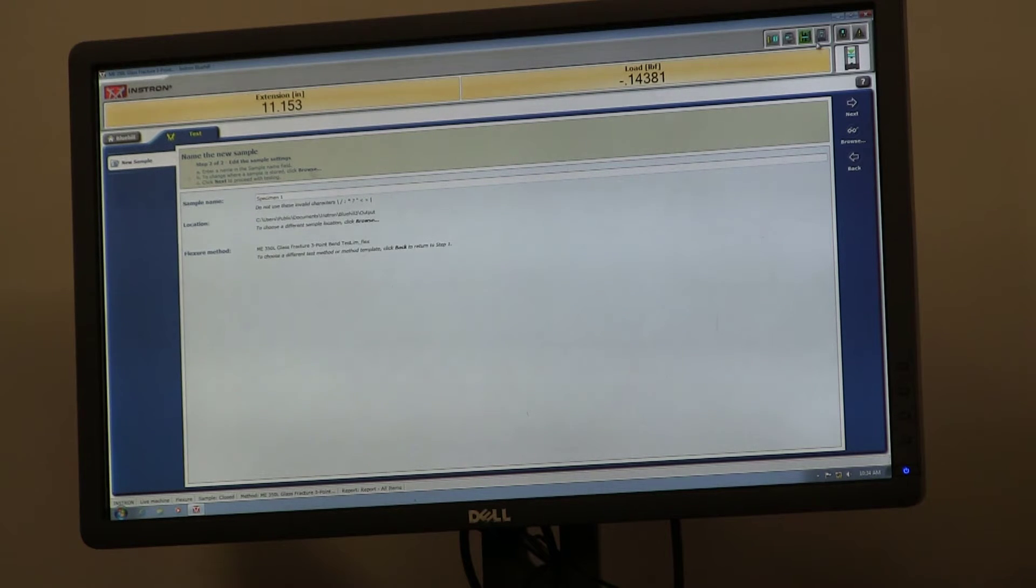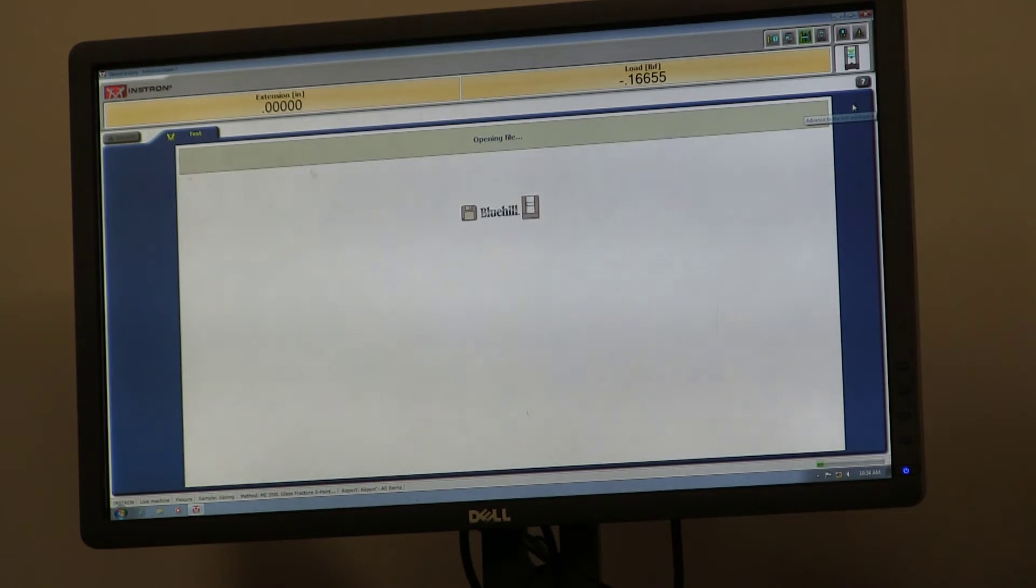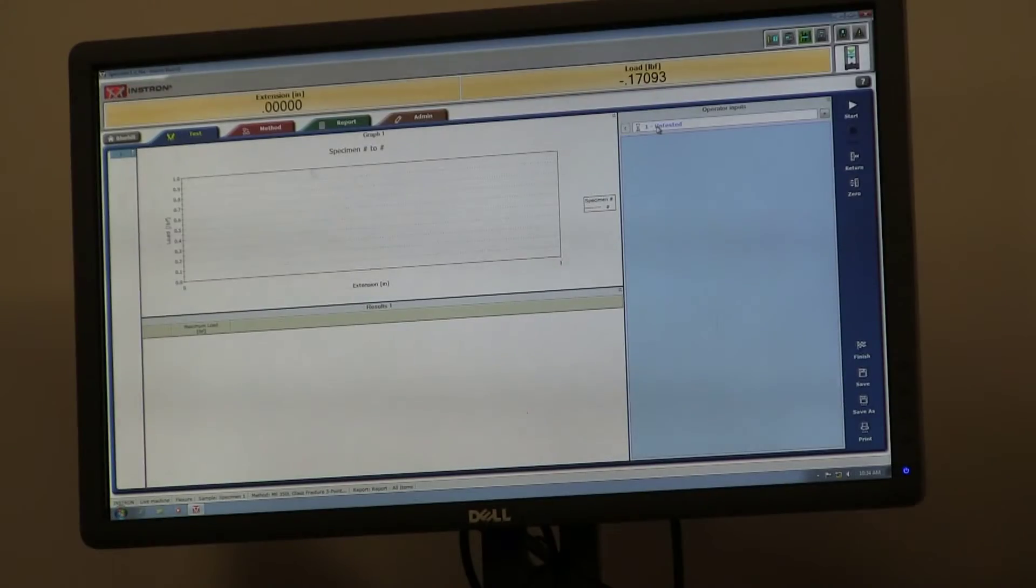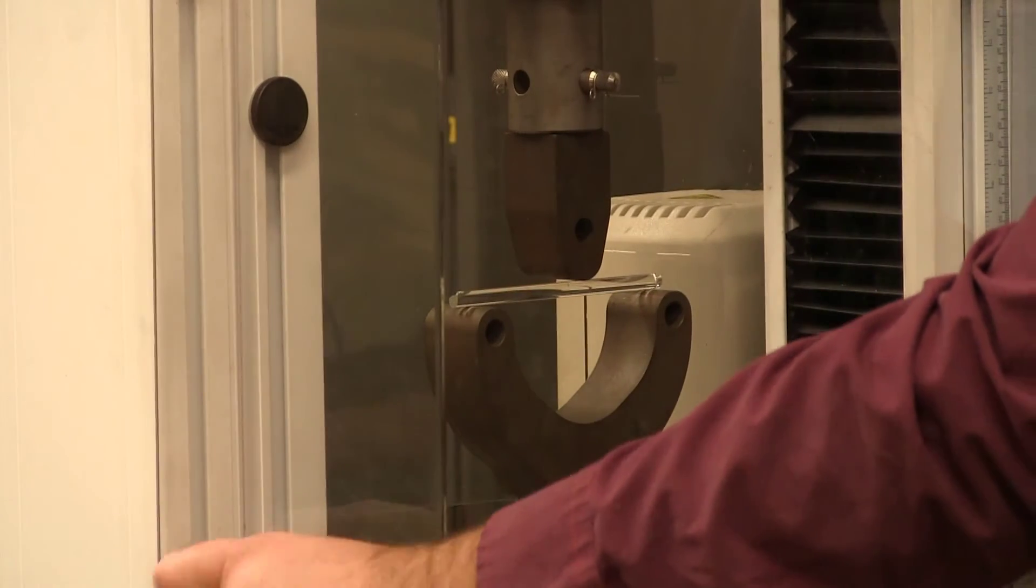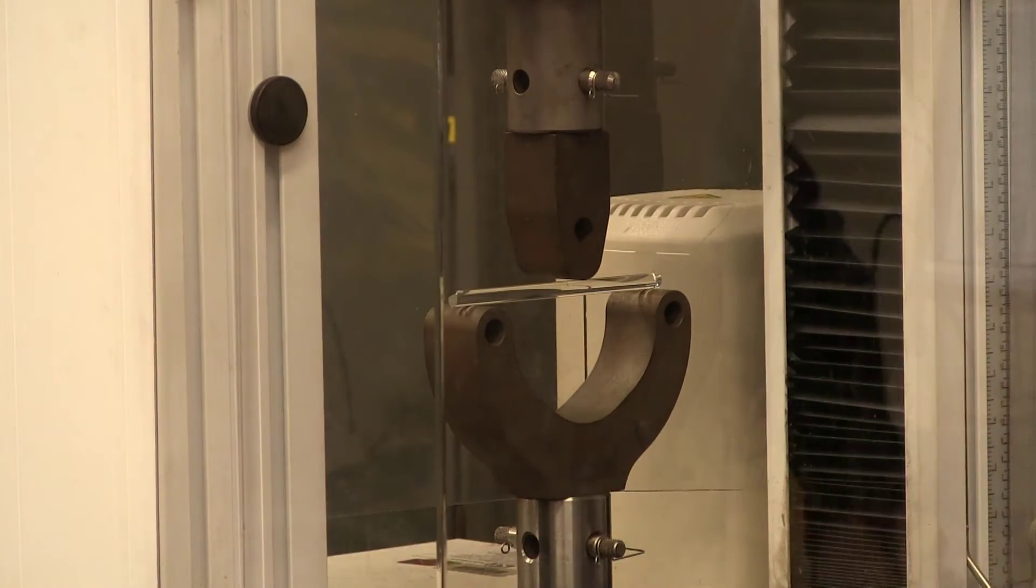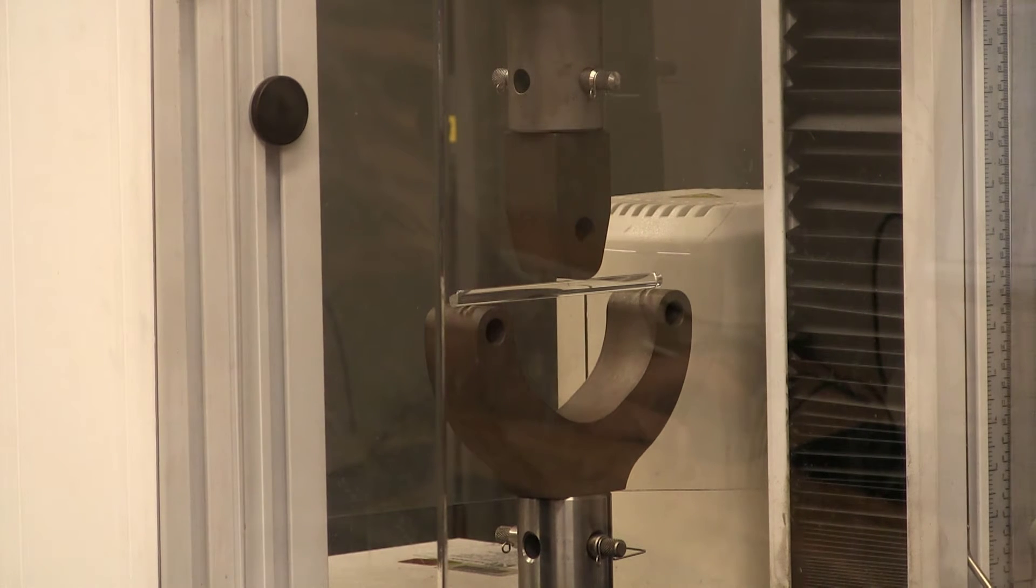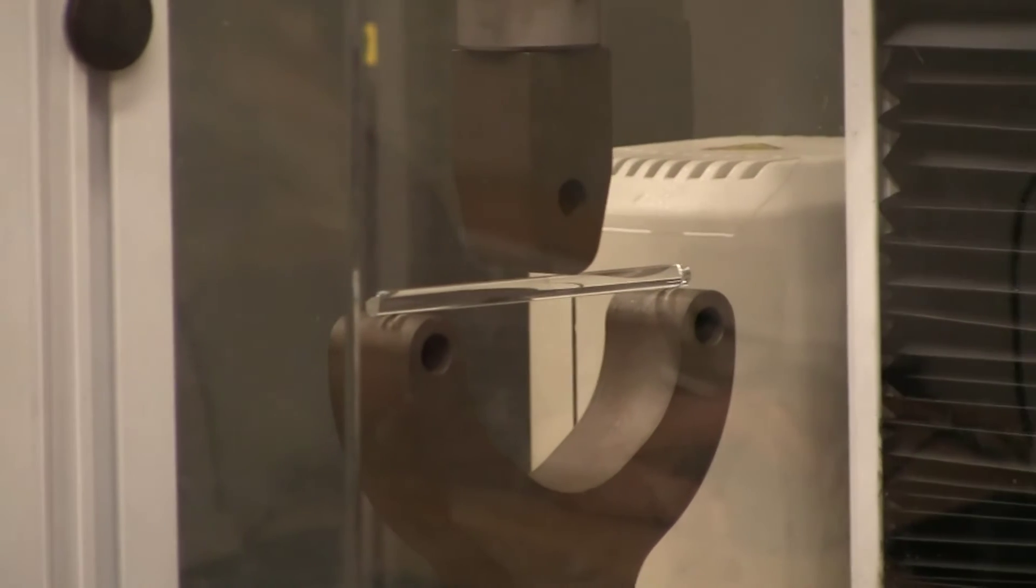And I'm going to zero the extension so that for my next specimen, I can just push return and it'll go back to here. And now we're ready to run our specimen. I put down the specimen name here. I'm going to push next, and we're ready to test. And at this point, I'm going to lower the shield, and I'm going to push run on the machine.